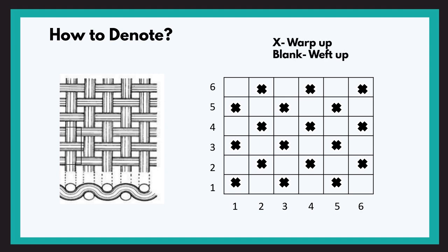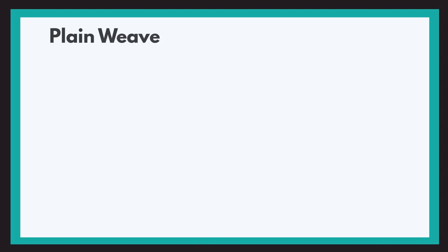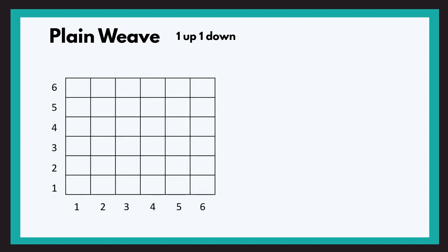Now let us learn about the most basic fabric — the plain weave. This weave has a one up, one down structure. Let us create a table and mark rows and columns, where columns denote warp threads and rows denote weft threads. For the first warp thread: cross for the first pick, blank for the second, cross for the third, blank for the fourth, cross for the fifth, and blank for the sixth pick.